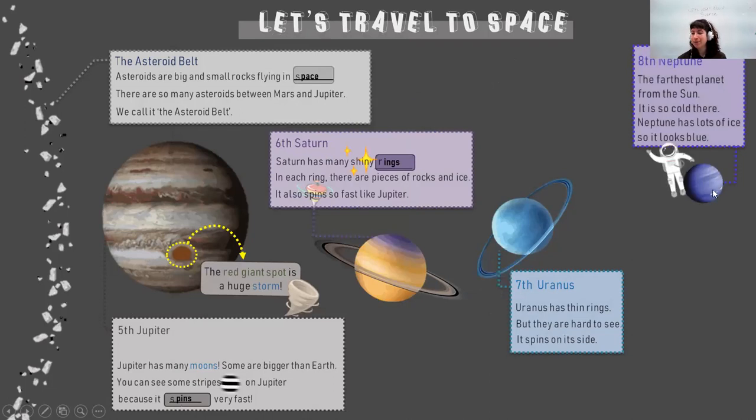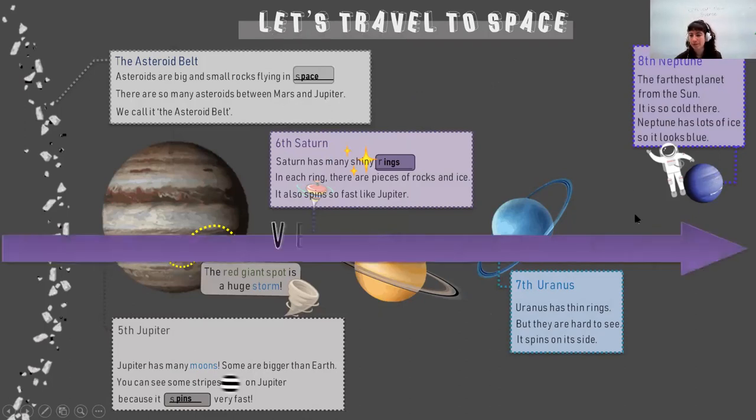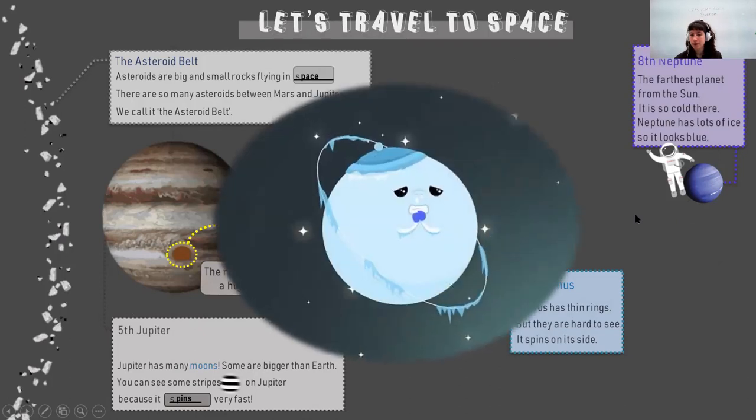And we've got Neptune here. It's our last planet. It's the farthest from the sun, very far. So do you think it's hot or do you think it's cold? It's very cold. Neptune has lots of ice. So that's why it's blue. It's always so cold.